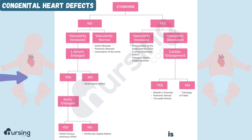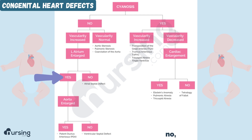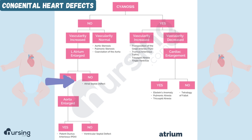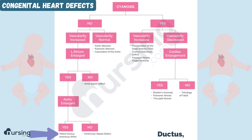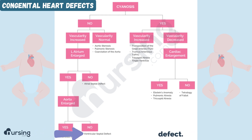Now if vascularity is increased, the next question we'll ask is the left atrium enlarged? If no, then we know that we have an atrial septal defect. If the left atrium is enlarged, going down the yes track, the next question we'll ask is the aorta enlarged? If yes, then we have a patent ductus arteriosus, a PDA. If no, then it's a ventricular septal defect.